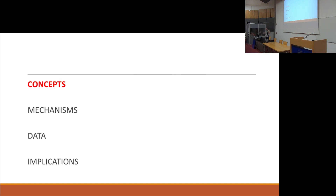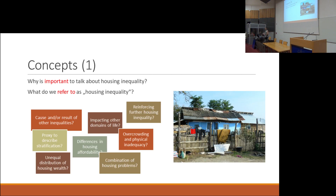I'm going to talk about concepts and mechanisms, data and implications, because concepts do vary. Literature about housing inequality has been there for like 100 years, so it's been always somehow of interest — why do people live in places where they do, what challenges they have, what problems they may have — so that particular presence of the topic has been there for a long while. But it may denote quite different things.